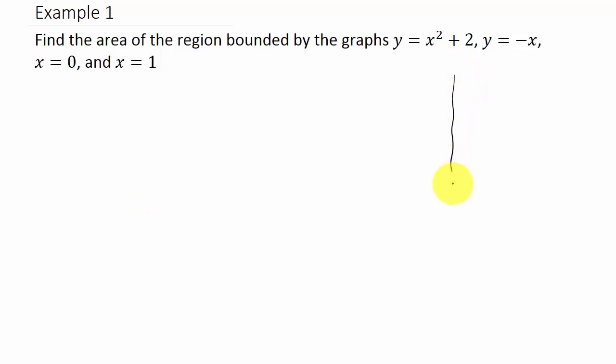So let's look at the graph of y equals x squared plus 2. Well, we know this is a parabola opening up and we have our vertex at (0, 2), and we know it's going to open upward.